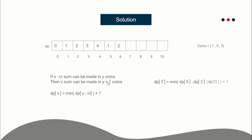For dp[7]: we have three values — dp[7-1]=dp[6], dp[7-5]=dp[2], and dp[7-7]=dp[0], which are 2, 2, and 0. The minimum is 0, so dp[7] = 0 + 1 = 1. So to calculate dp[x], minimize dp[x - c_i] over all coins and add 1.